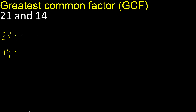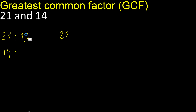Factors always start with 1. 21 divided by 1 is 21. Next, 21 cannot be divided by 2. Divided by 3 is 7. Next, cannot be divided by 4, cannot be divided by 5, cannot be divided by 6.